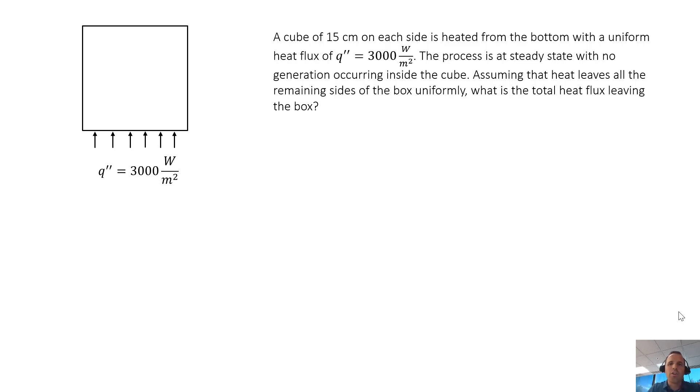In this short lecture we're going to be solving an example problem using energy balances. We're going to start out with a simple problem. A cube of 15 centimeters on each side is heated from the bottom with a uniform heat flux of Q double prime equals 3,000 watts per meter squared. The process is at steady state with no generation occurring inside the cube. Assuming that heat leaves all the remaining sides of the box uniformly, what is the total heat flux leaving the box?